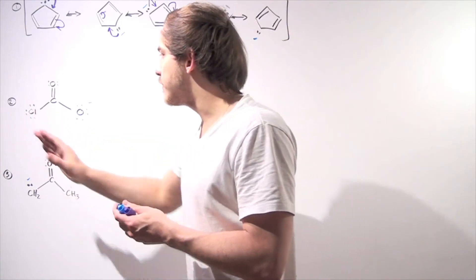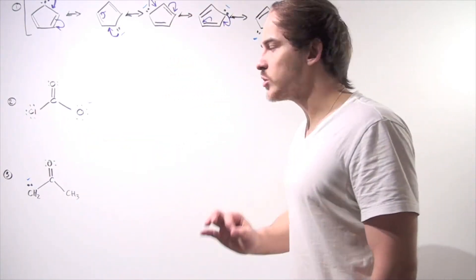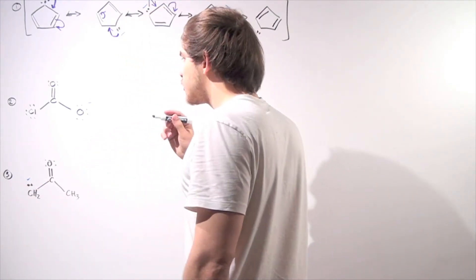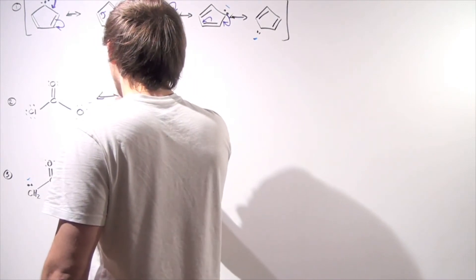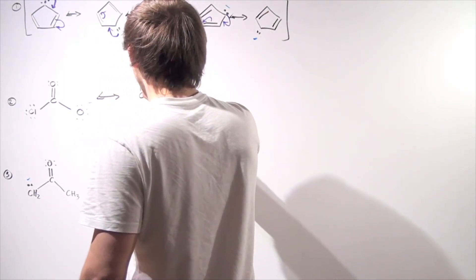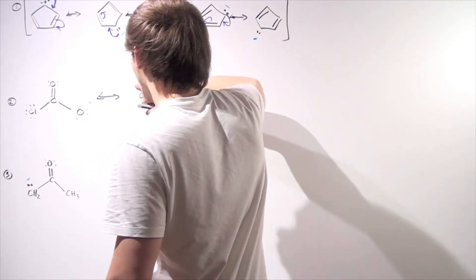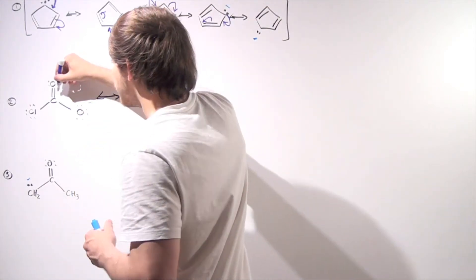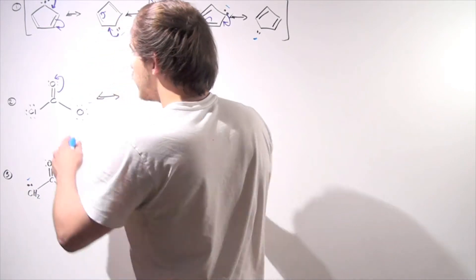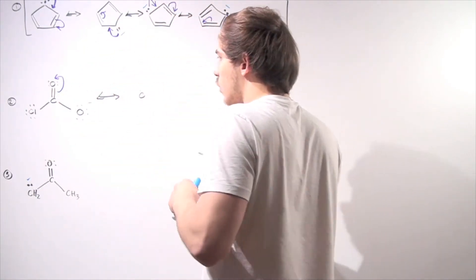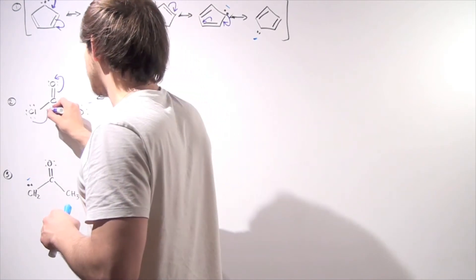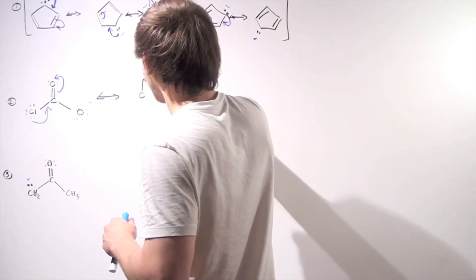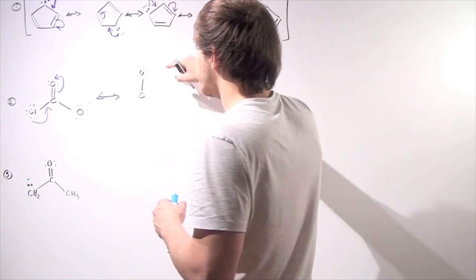Let's go on to example two. Once again, we're not moving atoms — what we're moving are electrons, creating different Lewis dot structures. In this molecule, we can move electrons onto this oxygen. If we move electrons onto this oxygen, we can then move this pair of electrons onto this bond, creating a double bond. So we have a single bond between our oxygen, now forming a negative charge there.